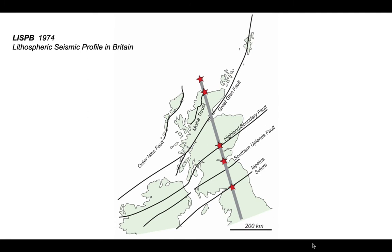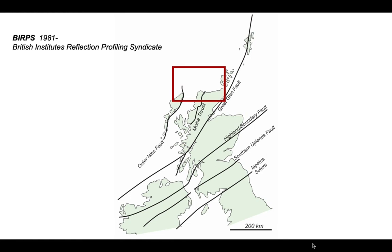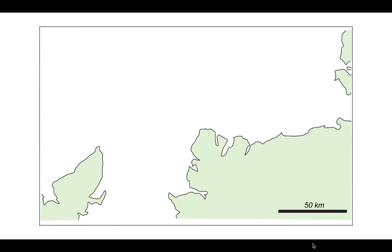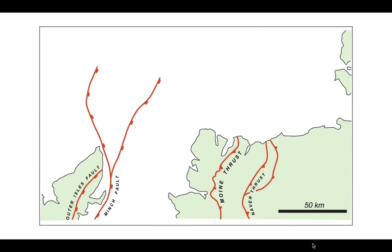There's the LISP profile, and we're going to go to the north into the offshore area. We're going to look at images acquired by the BIRPS programme — that stands for the British Institutions Reflection Profiling Syndicate — acquired in the early 1980s. Here's a map of that area showing the coastline of mainland Scotland, the northern part of the island of Lewis, and some of the Orkney Islands. There's a whole series of faults traceable from onshore into the offshore, with the Outer Isles and Minch faults traced through commercial seismic data.